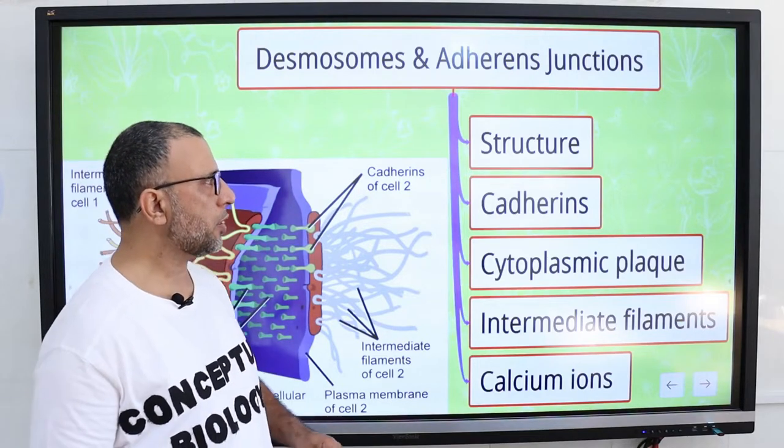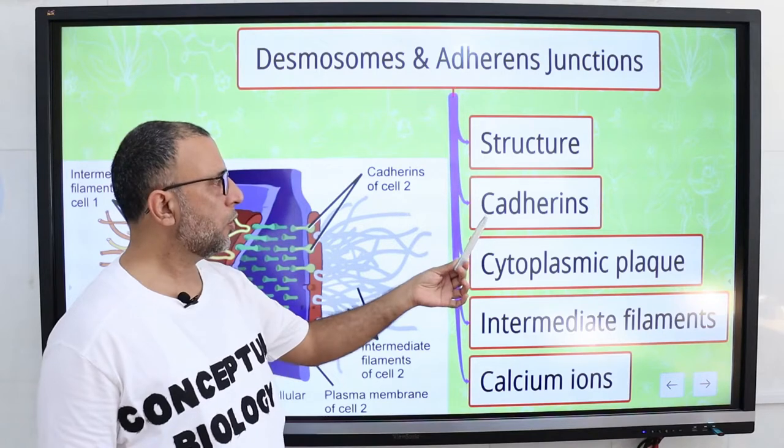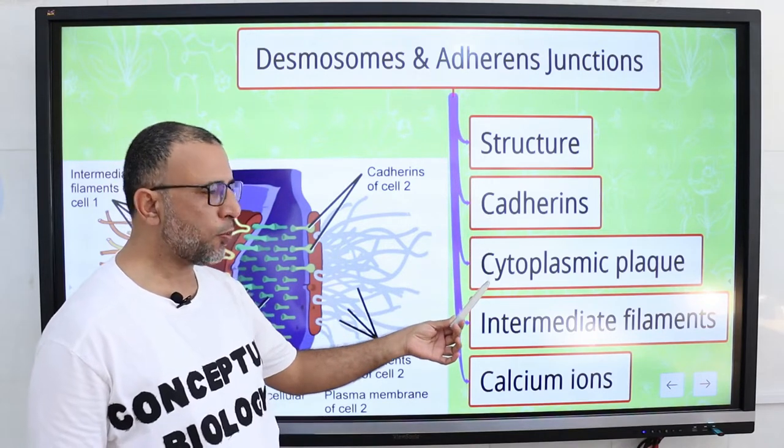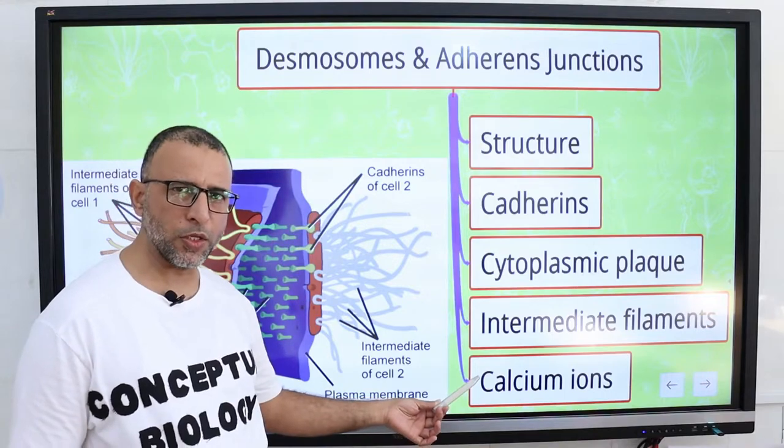Main points of the lesson are structure of desmosomes and adherence junctions, adherence, cytoplasmic plaque, intermediate filaments, and role of calcium ions.